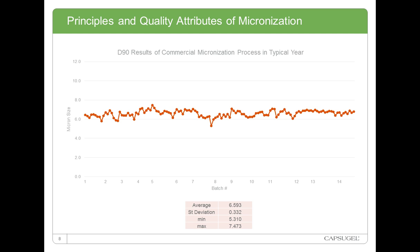More importantly for bioavailability enhancement, that distribution can be sub-10 microns with average particle sizes in the low single digits. Because it's a very homogeneous milling environment, the process is very reproducible between batches and milling campaigns. For example, a commercial product micronized at Powder Size runs well over a metric ton per batch, representing around 18 metric tons of commercial API annually. Looking at the D90 channel as a worst-case example, for an entire year including all in-process tests, the D90 averages 6.5 microns with a standard deviation well less than half a micron, and min-to-max variability is only about 1.5 microns.